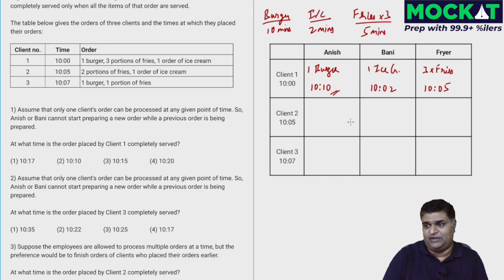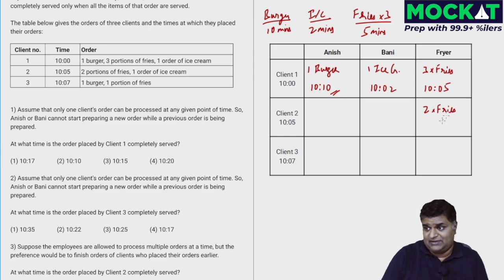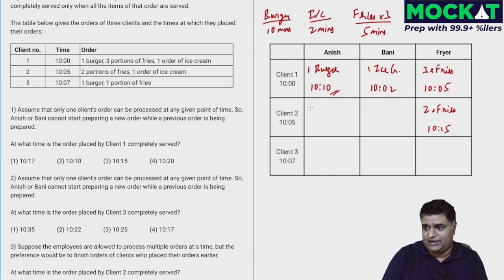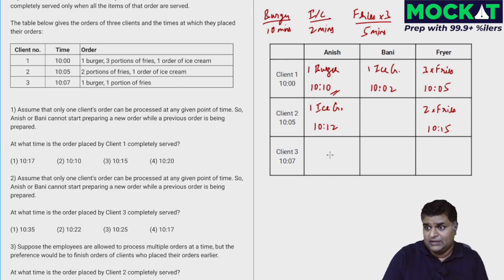The second client arrives at 10:05 but the order can only start once the previous order is complete at 10:10. Client 2's order has one ice cream and two portions of fries. The fries still take 5 minutes from 10:10, finishing at 10:15. The ice cream starts at 10:10 and is done at 10:12. But the full order isn't complete until 10:15.